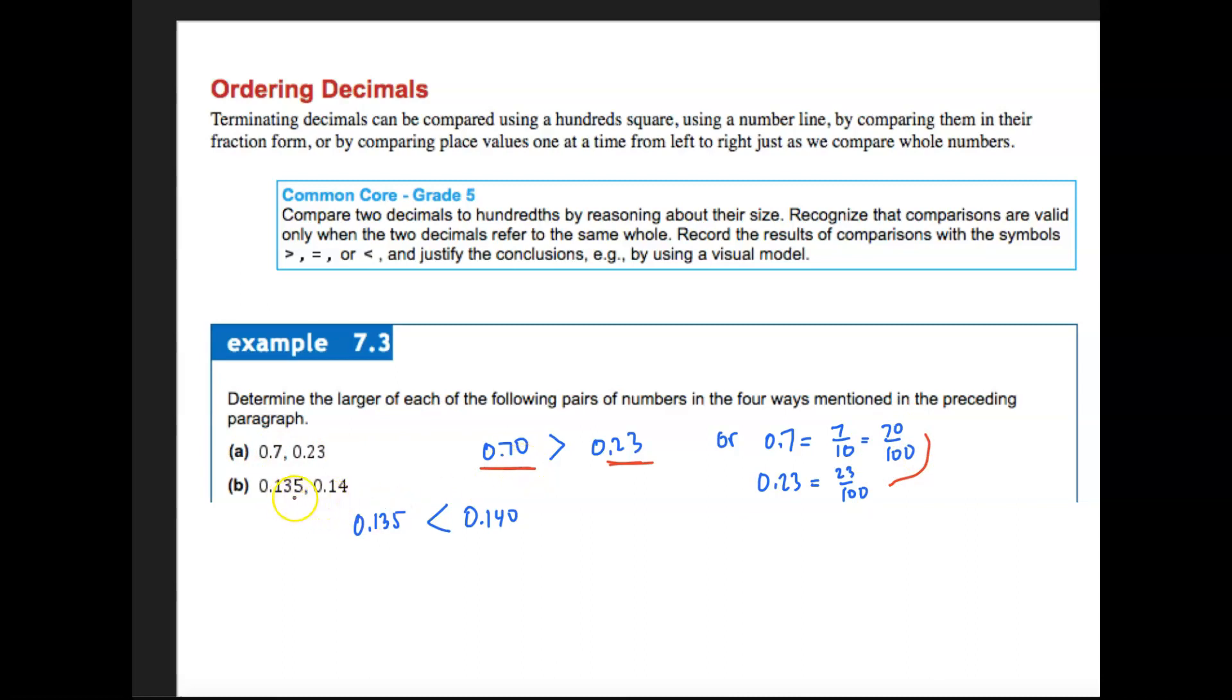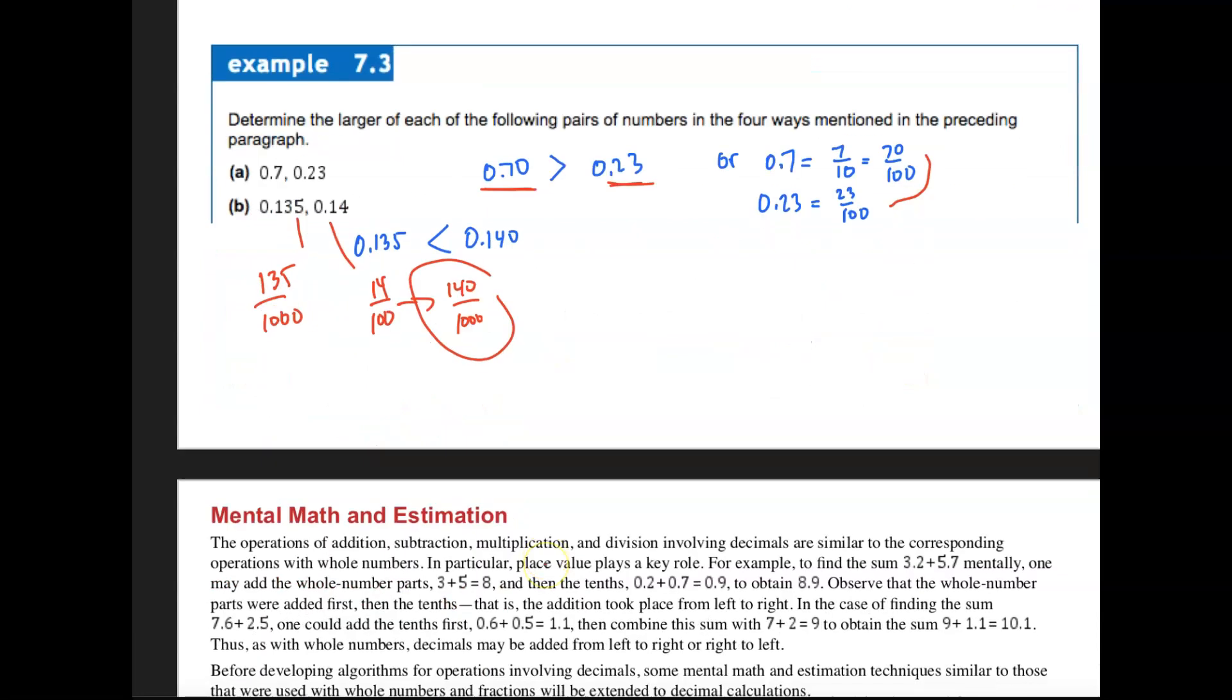Same thing here. What are we doing here? This here is technically 135 over 1,000. This one here is 14 over 100. And if you're going to have a common denominator, it's 140 over 1,000. And so you can see this one has to be bigger there. And so that's how we would order them.